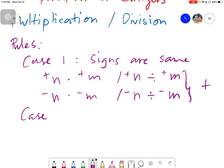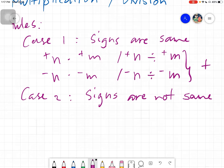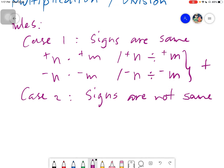Next one, case number two. In case number two, if the signs are not same. Kapag hindi daw sila parehas, so anong gagawin natin? So same, ganito yung ating gagawin is kapag may positive ka na n times negative na m.